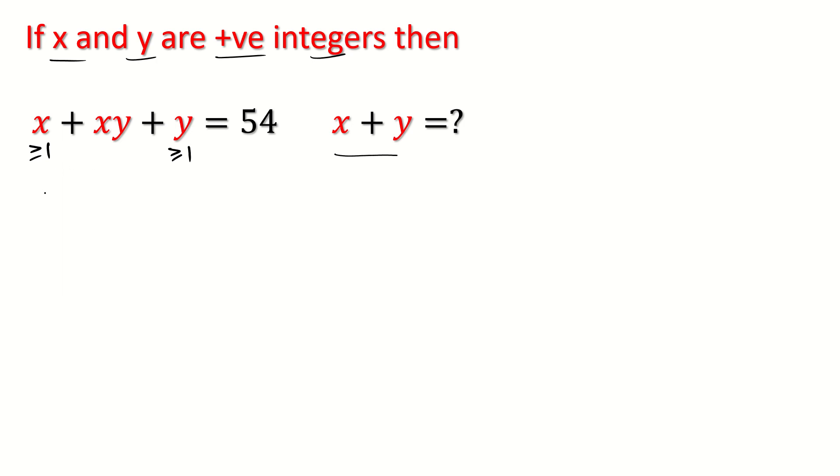If we take x common, we can write this: x times (1 plus y) plus y equals 54. Now we add 1 on both sides and we can write x times (1 plus y) plus (y plus 1) equals 55.